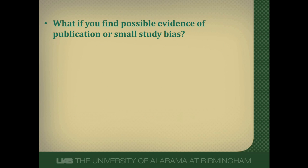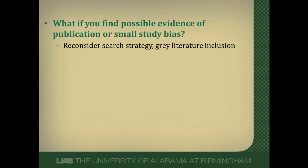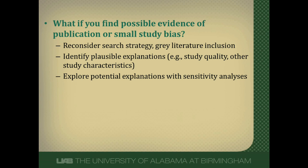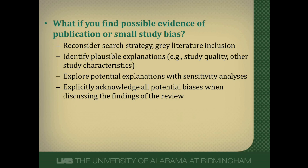So what if there is possible evidence of publication bias? You'd hope the authors reconsidered their search strategy and did a broader search. You'd like them to go through possible explanations for why there is publication bias, which can then lead to suggestions for further research to help improve the knowledge base for that area. You'd like them to explore these explanations — perhaps doing a sensitivity analysis — acknowledge any potential biases found, and discuss the implications in their review. Finally, if biases are so bad, you may just have to wait for more studies to be done and either abandon the current systematic review or redo it once more studies are available.